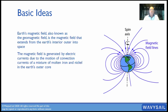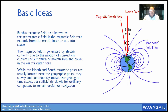The magnetic field is generated due to the currents, motions, and convections of the mixture of molten iron and nickel in the outer core of the earth that spins around. So all this melted material in our core — that spinning is actually what causes it. The north and south magnetic poles are usually located near the geographical poles, but they slowly and continuously move over geographical time scales.